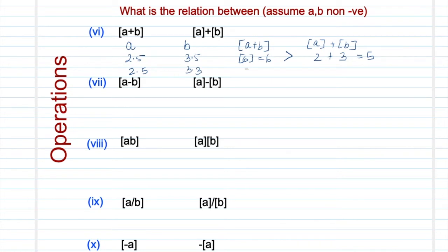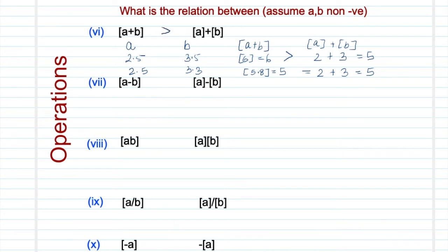Now ⌊a+b⌋ = ⌊5.8⌋ = 5, and ⌊a⌋ = 2 plus ⌊b⌋ = 2, giving 4... wait, that also gives 5, so there is equality here. This tells us ⌊a+b⌋ is not always equal to ⌊a⌋ + ⌊b⌋, but it is greater than or equal to it. No matter how many examples you try, you cannot just replace ⌊a+b⌋ with ⌊a⌋ + ⌊b⌋. The relationship is: ⌊a+b⌋ ≥ ⌊a⌋ + ⌊b⌋.